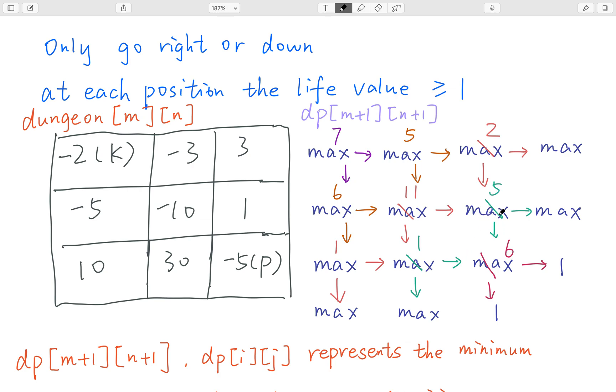How about this place? It's depended on the cell down and the cell on its right. So I pick the minimum, which is 6. And at this place, I will increase by 1. So I minus this one. This is the minimum health point I need to reach here. So I write 5.